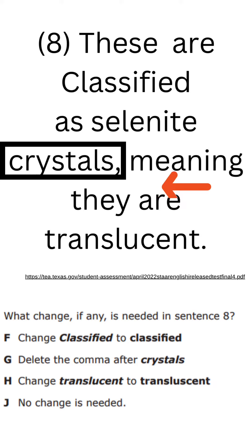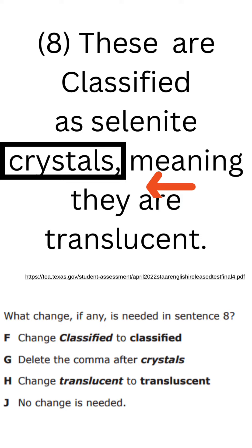The extra information — in this case the definition — is called an appositive. It will always have a comma before it and behind it, if it is not followed by a period. F is the correct answer. 'Classified' should be lowercase because it is a verb, not a proper noun.